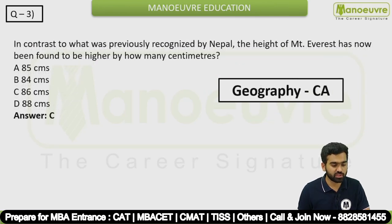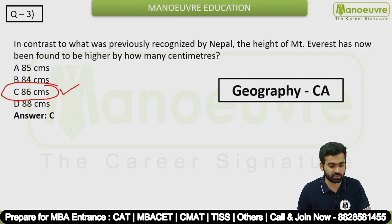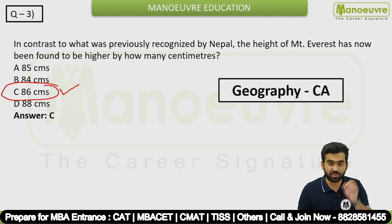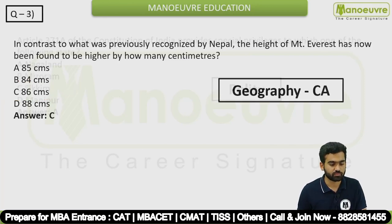Question 3: In contrast to what was previously recognized by Nepal, the height of Mount Everest has now been found higher by how many centimeters? The answer is 86 centimeters — it is 86 centimeters more than what was previously recorded. This is a geography question but related to current affairs.